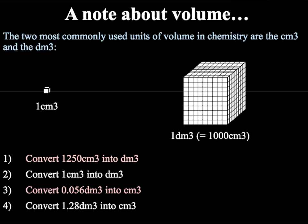Before we look at calculating concentrations, you also need to be able to convert between different units of volume. The two most common in chemistry are cm³ and dm³. Here, 1 dm cubed is equal to 1000 cm³. Here we have four conversion questions — again, I would like you to pause the video, work out the conversion, and then restart the video.